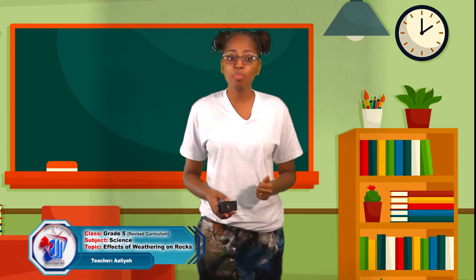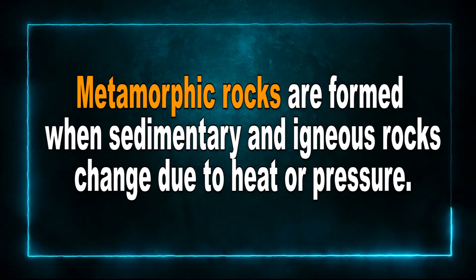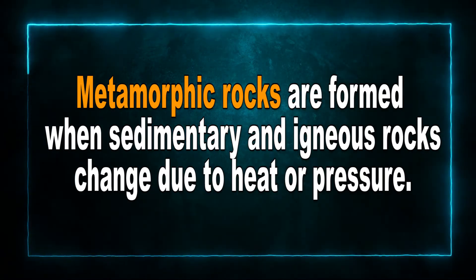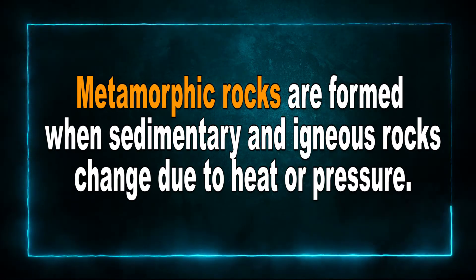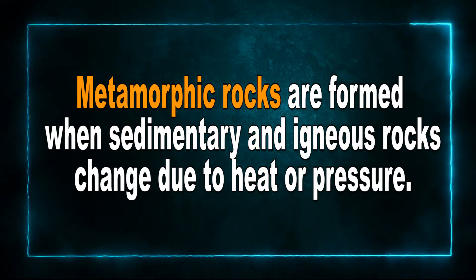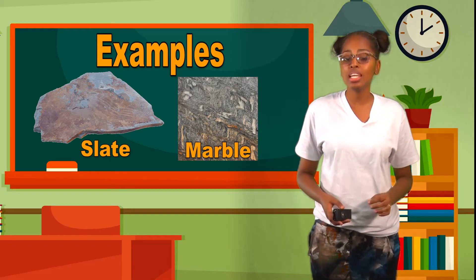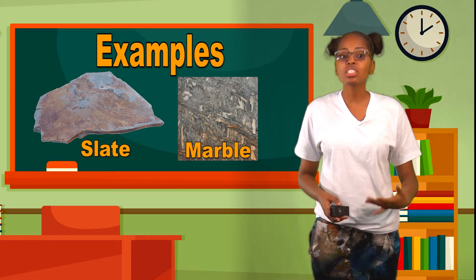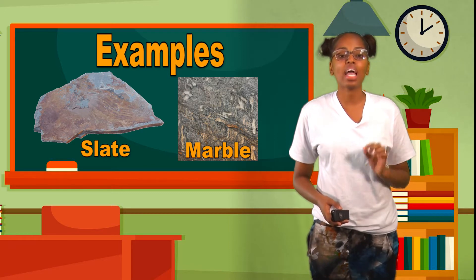The final rock type we'll be discussing today is metamorphic rocks. Metamorphic rocks are formed when sedimentary and igneous rocks change due to heat or pressure. Examples include slate and marble. Metamorphic rocks are very hard but can be damaged by acids.